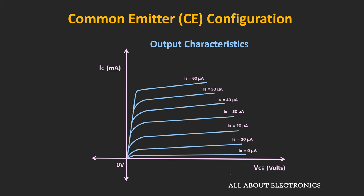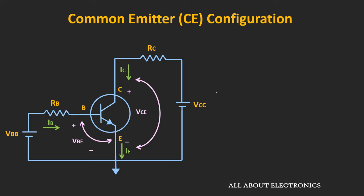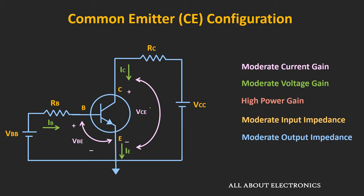During the active region of operation, the input current gets amplified by the factor β — the current gain of this configuration. When a load is connected between the collector and emitter terminal, we can also obtain voltage gain. The common emitter configuration provides moderate current gain as well as moderate voltage gain, but it provides very high power gain. That is why this configuration is frequently used for signal amplification.